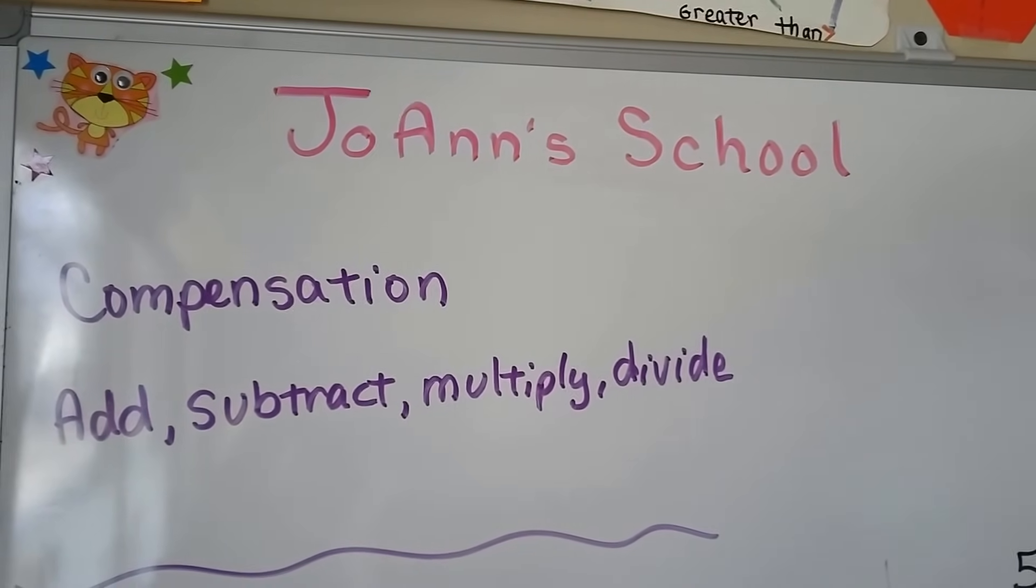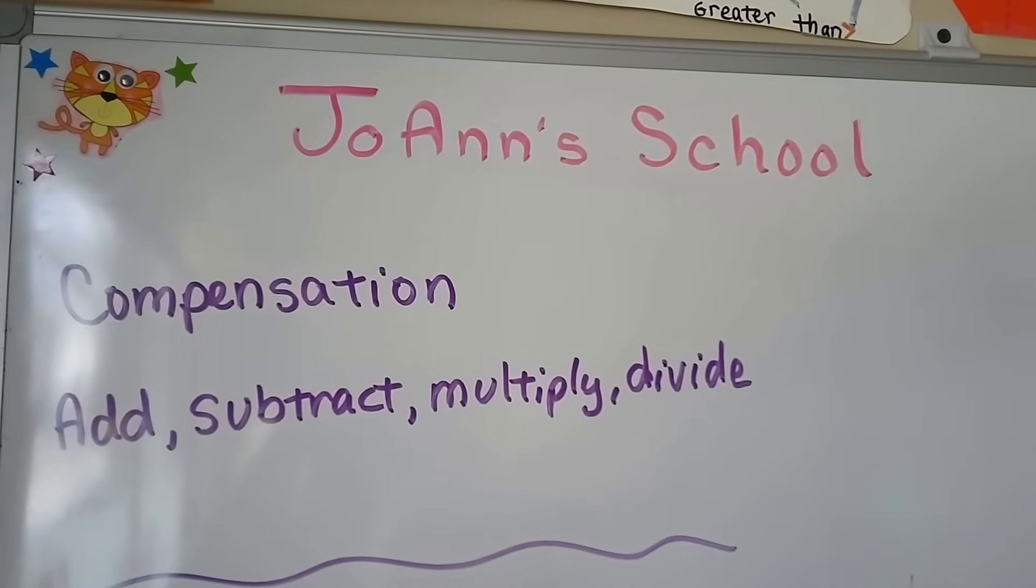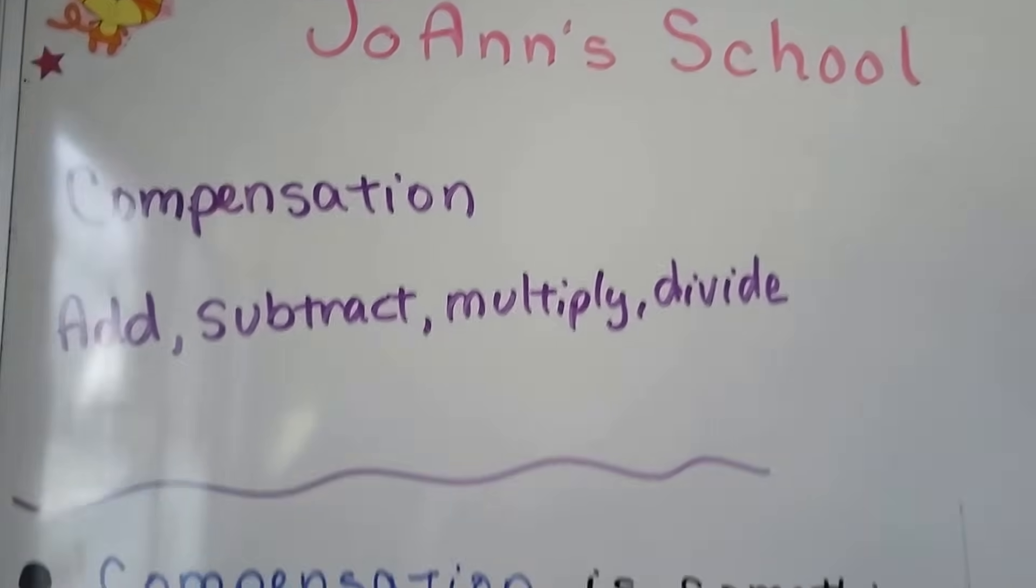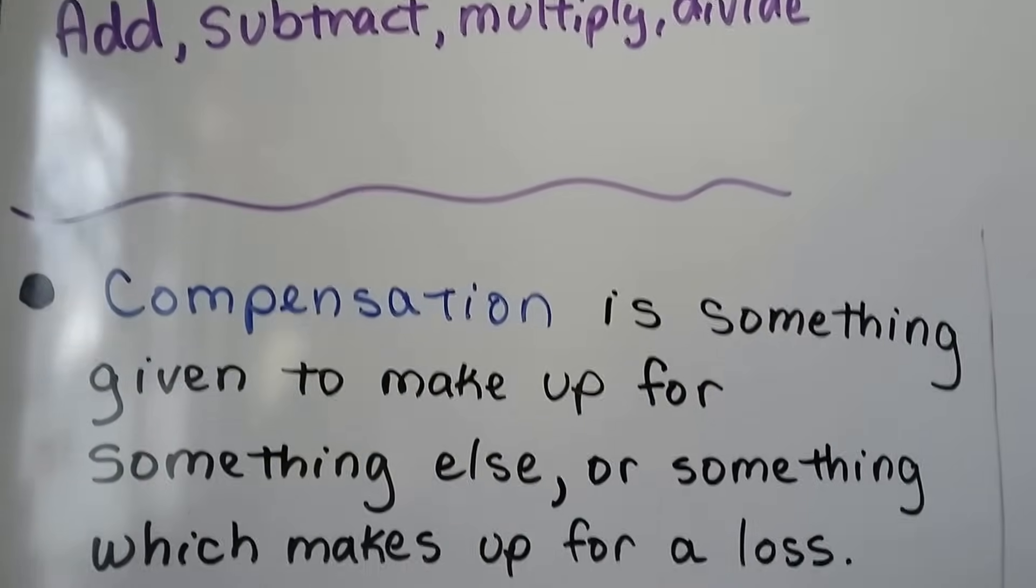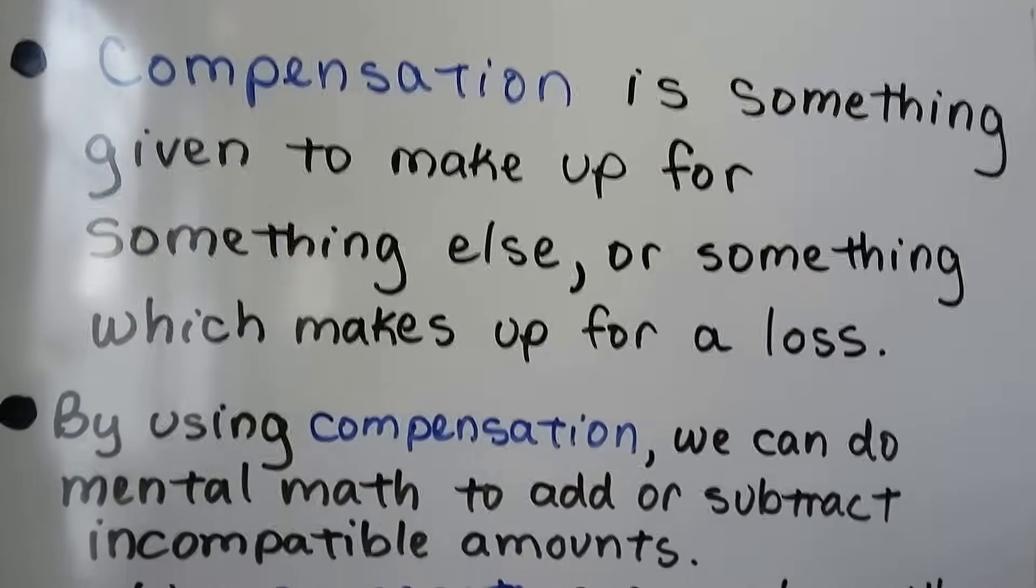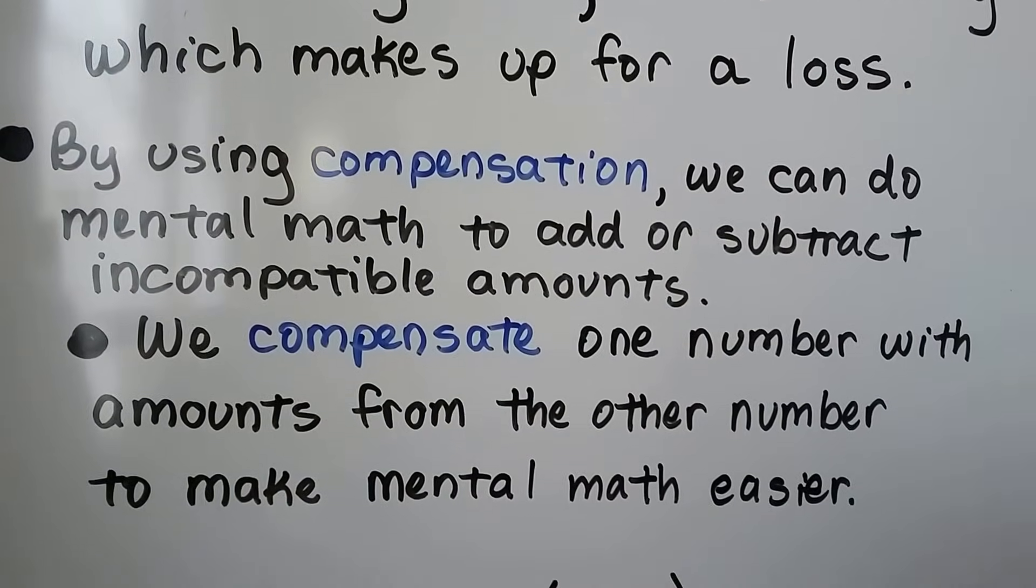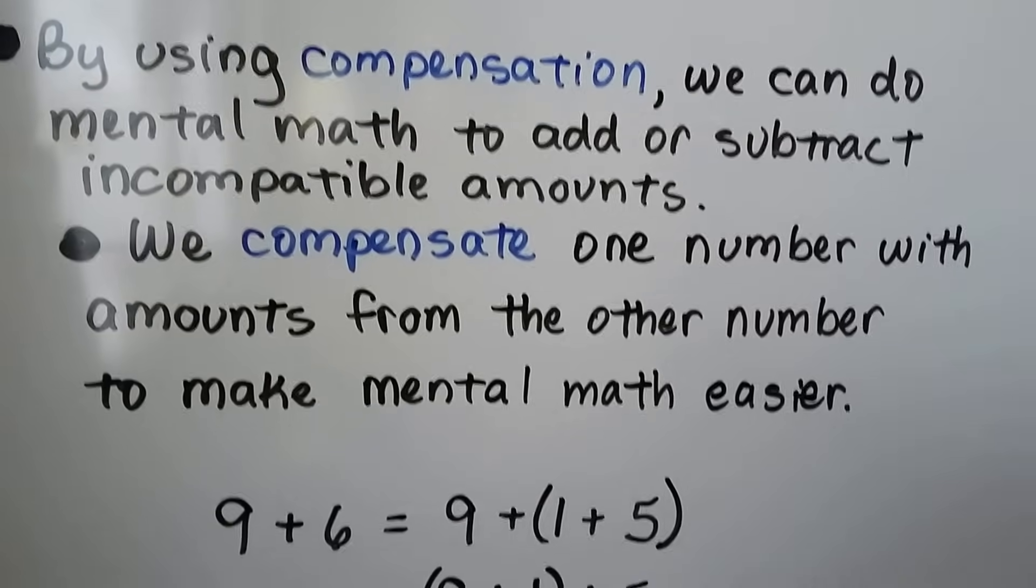This is all about compensation, and we can add, subtract, multiply, and divide by using the compensation strategy or method. Compensation is something given to make up for something else, or something which makes up for a loss. By using compensation, we can do mental math to add or subtract incompatible amounts.